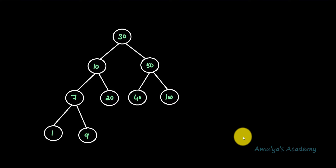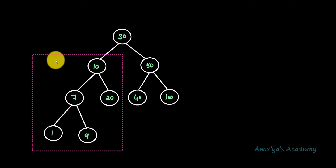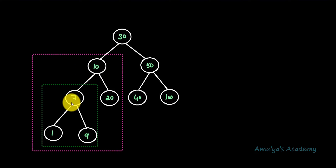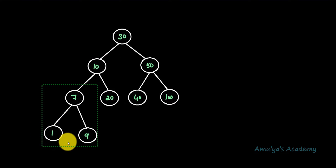Let's take an example. Here we have a binary search tree. If I want to find the smallest node I need to search in the left subtree. This is the left subtree of the root node, and within that subtree I need to find the smallest value on the left side. For this subtree, this is the root node, this is the left subtree, and this is the leftmost value. So one is the smallest value in this binary search tree.